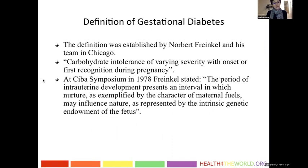Subsequently, the definition was established by Dr. Franco and his team in Chicago. The first definition was a carbohydrate intolerance of growing severity with onset or first recognized during pregnancy. At the symposium in 1978, Dr. Franco stated that the period of intrauterine development presents an interval in which nurture, as exemplified by the character of maternal fuels, may influence the nature as represented by intrinsic genetic endowment of the fetus. That was the first official definition of gestational diabetes.